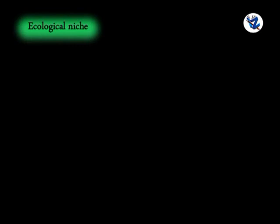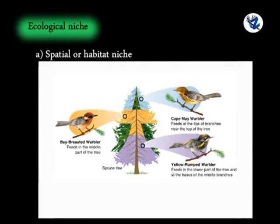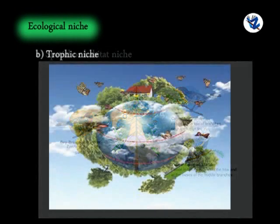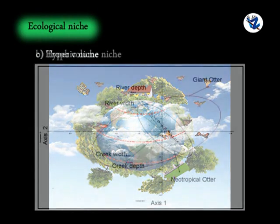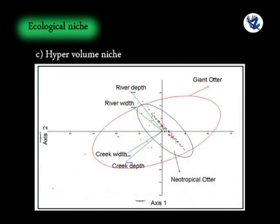There are three main aspects of ecological niche. One, Spatial or Habitat Niche — the physical space occupied by the organism. Two, Trophic Niche — the trophic position of the organism and its functional role. Three, Multidimensional or Hypervolume Niche — the position of the organism in the environmental gradient.